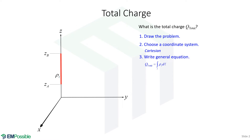We'll write the general equation. We presented a table depending on whether it's a line, surface, or volume charge, and whether we're calculating total charge or total field. We pull an equation from that table. This is the general equation for the total charge of a line charge, and it's independent of the coordinate system. We'll now write this in Cartesian coordinates by writing expressions for each term. We have ρ_L and DL. The ρ_L is just a constant, so it stays ρ_L.